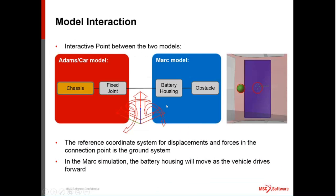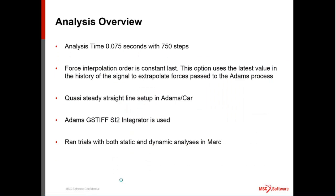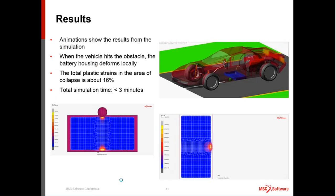The MARC model uses a G-force taking the force response from MARC and passing it into ADAMS, while ADAMS passes motion data back to MARC. The physical event time is 75 milliseconds at 750 steps using the SI2 integrator. Both static and dynamic analyses in MARC were tried — running quasi-statically versus dynamically — to determine whether inertial effects significantly influence the key results, which is useful when running many iterations of the same event.